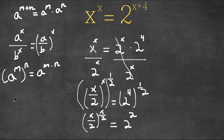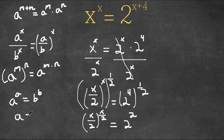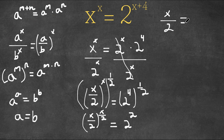Now, if we have something in the form a to the power of a is equal to b to the power of b, then this also means that a is equal to b. So think of x over 2 as a and 2 as b, meaning if we have x over 2 to the power of x over 2 equals 2 to the power of 2, this would also mean that x over 2 is equal to 2.